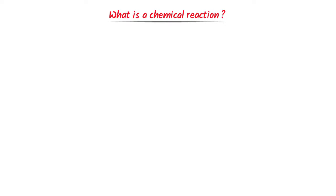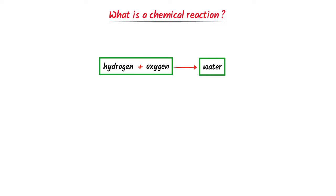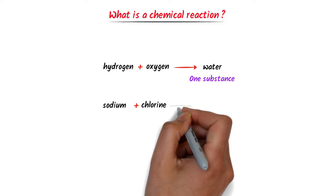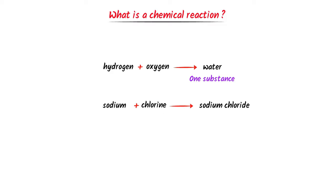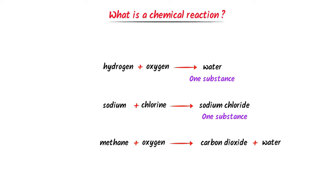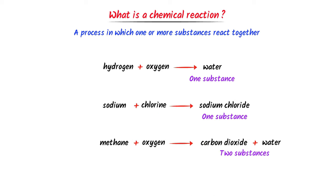What is a chemical reaction? When hydrogen and oxygen react together, they form water — hydrogen and oxygen are reactants and water is the product. Similarly, sodium plus chlorine form sodium chloride, and methane burned in oxygen produces carbon dioxide and water vapor. We define chemical reaction as a process in which one or more substances react together to form one or more new substances.